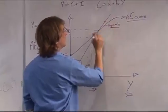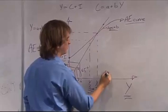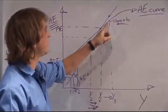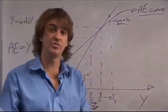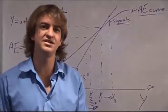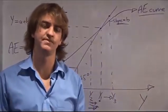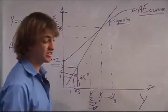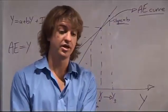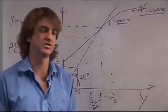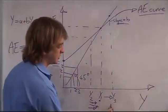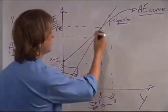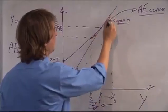In the case where your actual output is above equilibrium — say Y3 — your aggregate expenditure is lower than the output you produce. In that case, you have unintended inventory accumulation. The manager sees more inventory piling up and decides to slow down production. They'll slow down output up until the point when their inventories remain the same. That's how you get to equilibrium in the system — you shift from both sides toward equilibrium.